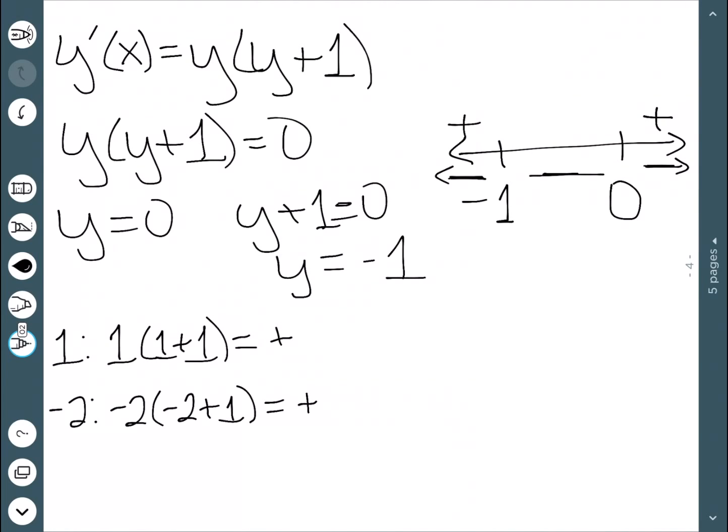If I think of something in the middle, like negative 1 half, then I have negative 1 half times negative 1 half plus 1. I can see I have a negative times a positive, which will be negative. So now I have a general idea of when this thing is positive and when it's negative.